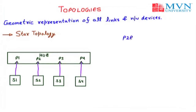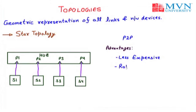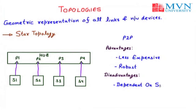The main advantages of star topology are that it is less expensive — we need only computers, a hub, and wires — and it is robust, meaning it can handle faults easily. The main disadvantage is that it is dependent on a single point: all systems S1, S2, S3, and S4 depend on the single hub, so if the hub fails, the entire network fails.